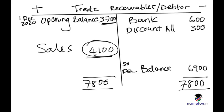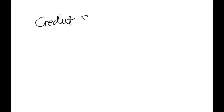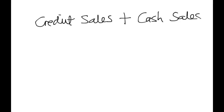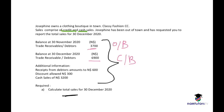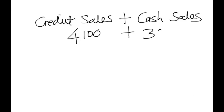Total sales equals your credit sales plus your cash sales. The credit sales we just calculated are 4,100, plus cash sales of 3,200, giving total sales of 7,300.